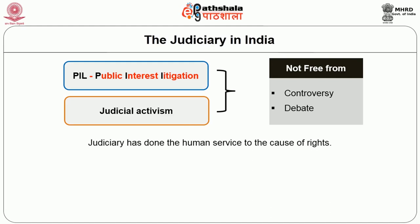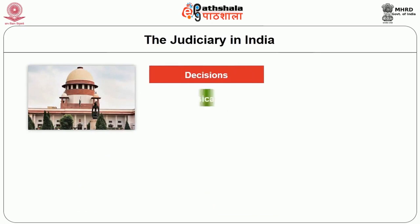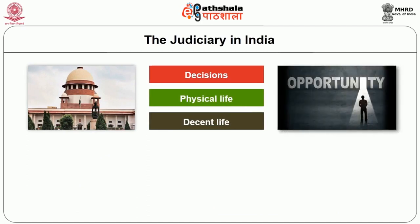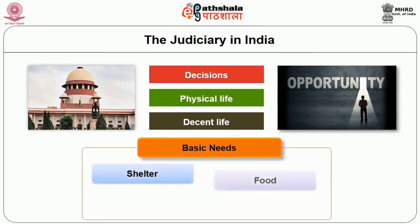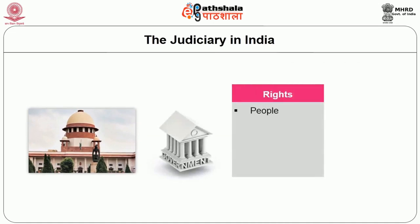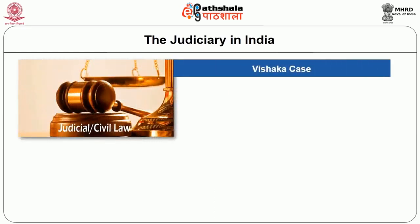There has been debate and controversy around PIL and judicial activism, but the judiciary has done a great service to rights. Under Article 21, the Supreme Court in several decisions has said that 'life' does not mean merely physical life but a decent life. Human beings need opportunities to fulfill their basic economic needs — shelter, food, clothing, employment. The Supreme Court has held that the right to food, shelter, and education should all be covered under Article 21. Life should mean access to opportunity structures to develop one's potential.